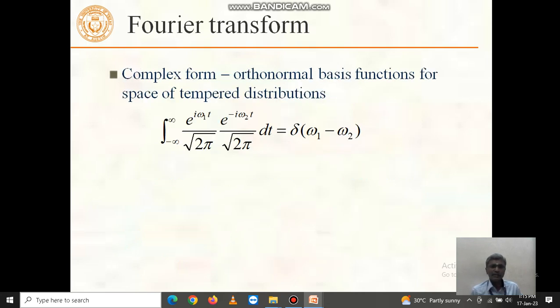So next one, complex form for Fourier transform, that is complex form orthonormal basis functions for space of tempered distributions.